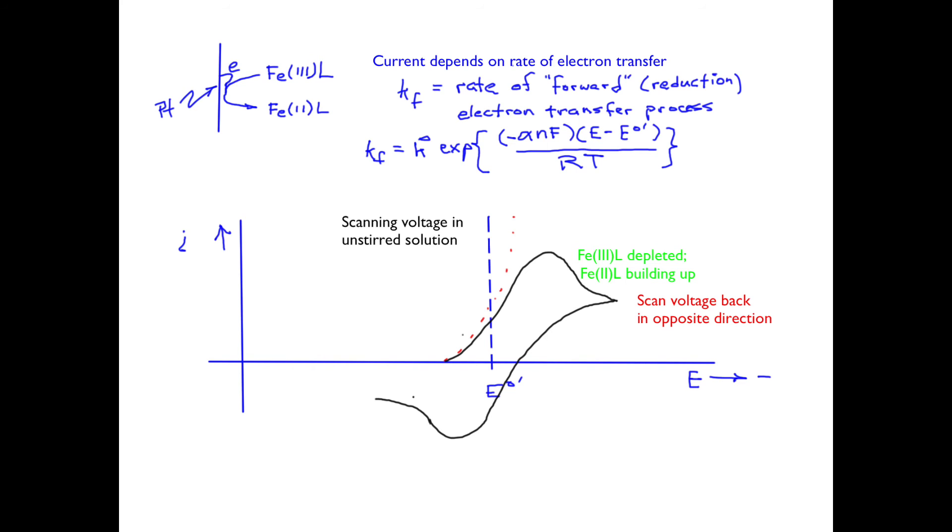As we go more positive, we eventually get to a point where we can convert the iron 2 back to the iron 3 starting material. The current for the forward reaction is proportional to the concentration of the starting material. It is also proportional to the voltage scan rate to the one-half power. This relationship has been used in a number of situations, such as monitoring the concentration of dopamine and other neurotransmitter molecules at the synapse for neurons in brain experiments. Notice that this duck-like profile is somewhat symmetric about the formal potential.